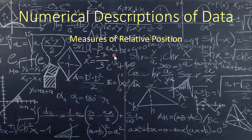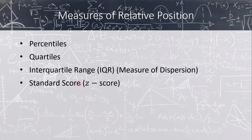Hi everybody. This video is going to be the first of what I believe will be a collection of videos covering section three of chapter three, and here we're going to talk about measures of relative position. We've done center, we've done spread, now we're going to look at where each data point lies relative to all the other data points. In this video we'll talk about percentiles, and in the subsequent video we will talk about quartiles and interquartile range, and we're going to talk about the z-score or standard score, which is something we'll be using quite often throughout the remainder of this course.